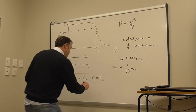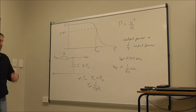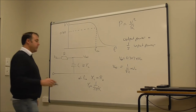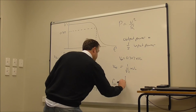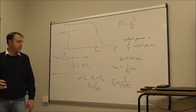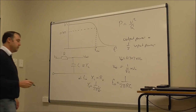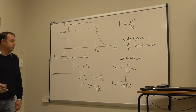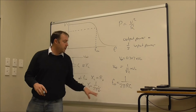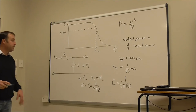X_C equals 1 over 2π f C. So if the reactance is equal to the resistance, we can find the cutoff frequency: f_co equals 1 over 2π R C. R equals X_C equals 1 over 2π times the cutoff frequency times the capacitance — transpose that and I get the cutoff frequency calculated by using 1 over 2π R C.